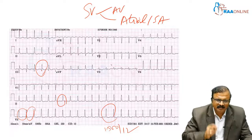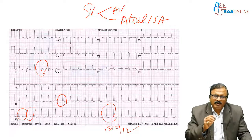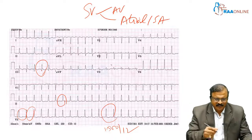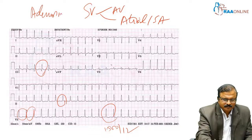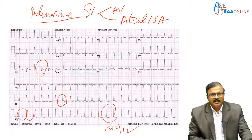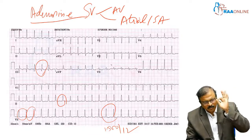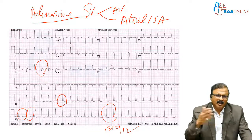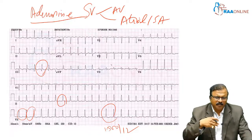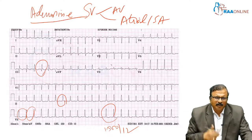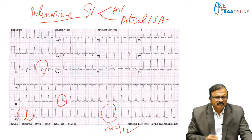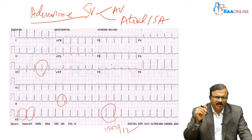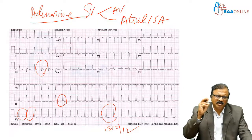This is supraventricular tachycardia — no P waves, normal QRS. The treatment for this patient is emergency adenosine. Adenosine is contraindicated in airway disease, so you must rule out airway disease before giving it. For long-term management, verapamil or amiodarone can be given. If there is an accessory pathway, it can be ablated — radiofrequency ablation after identifying the pathway by electrophysiology study.